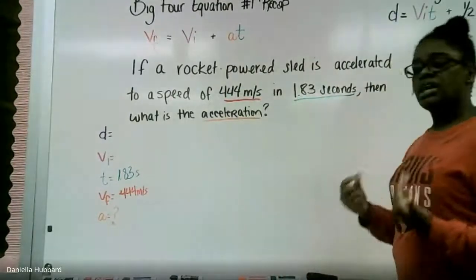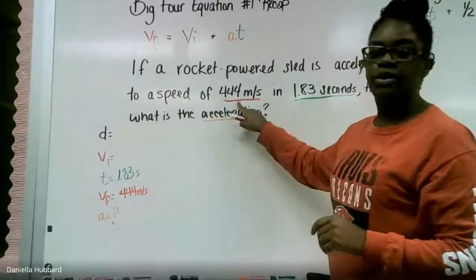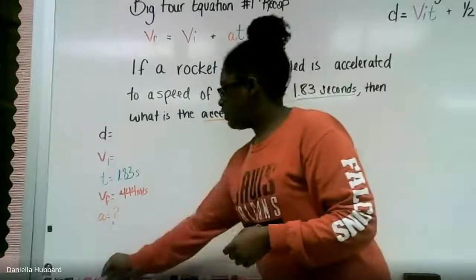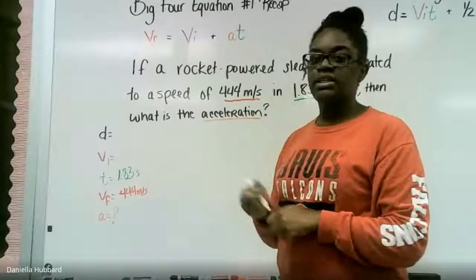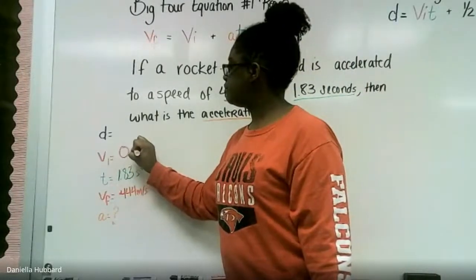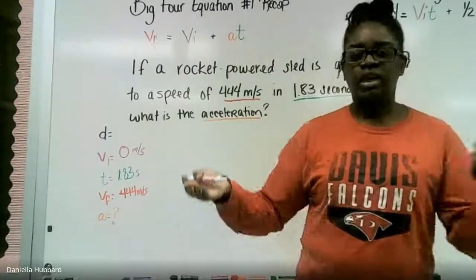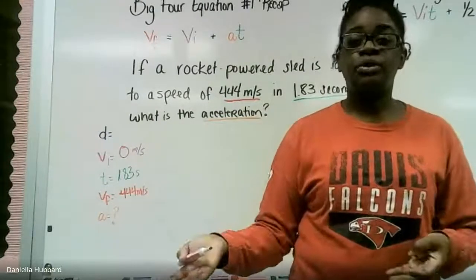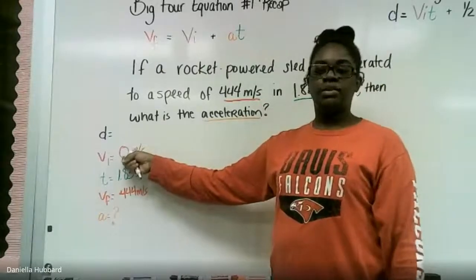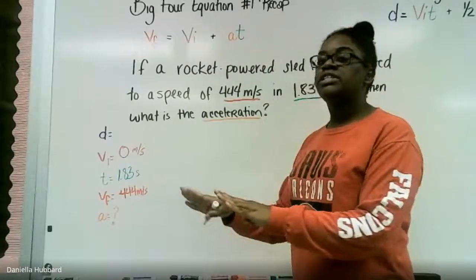And since we're talking about accelerating to a final speed of 444, then we can infer that our initial velocity, our beginning speed, is zero. How do you know that's zero? Well, when you're in the vehicle and you started up, are you moving? No, you're not. So your initial speed is zero, and then once you start driving you're going to increase your speed, which is acceleration.